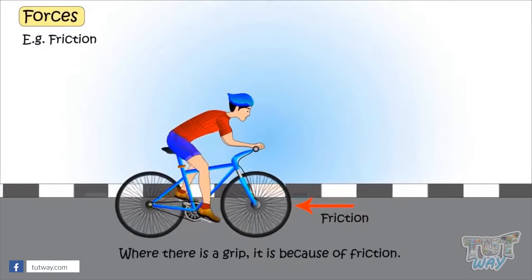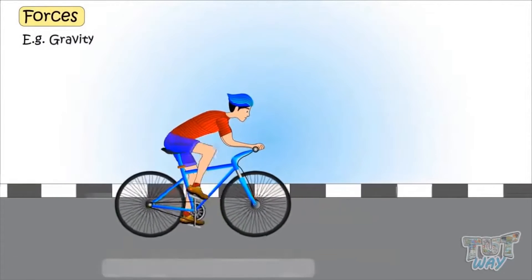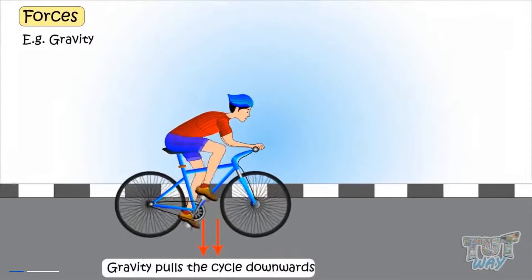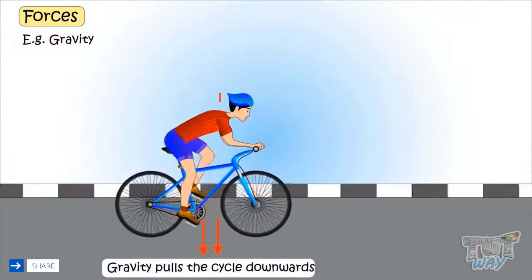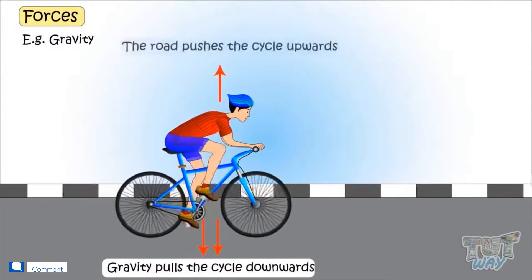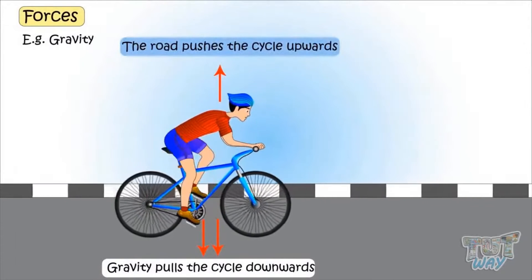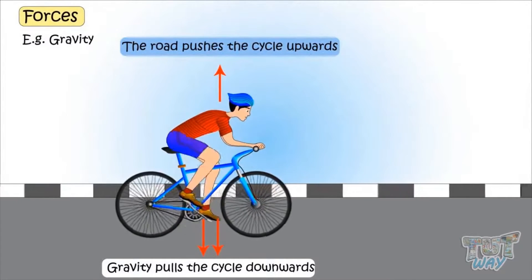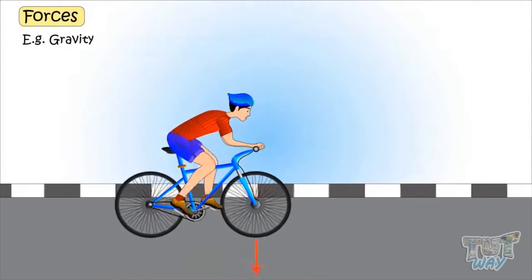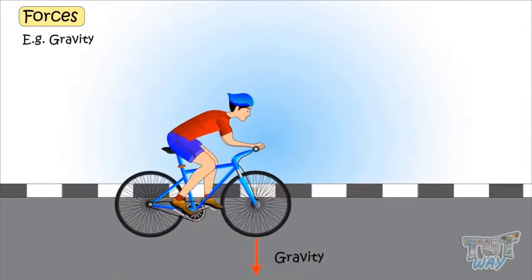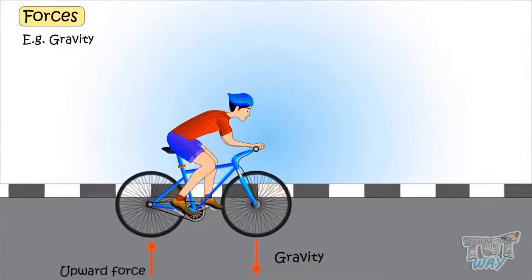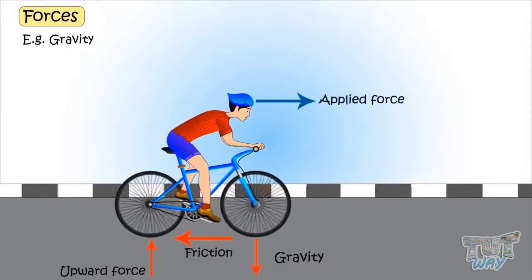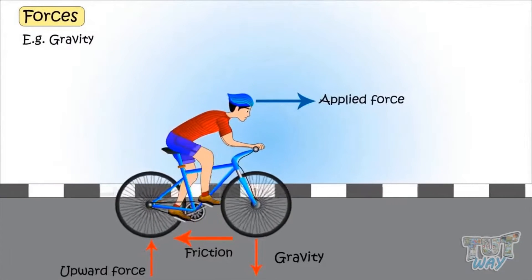The next force acting here is gravity. The force of gravity pulls the cycle downwards. There is also a force acting from the ground, pushing it upwards. So there are different forces acting while riding a bicycle: gravity pulling down, the ground pushing upward, friction opposing the movement, and applied force, or muscular force, moving it forward.